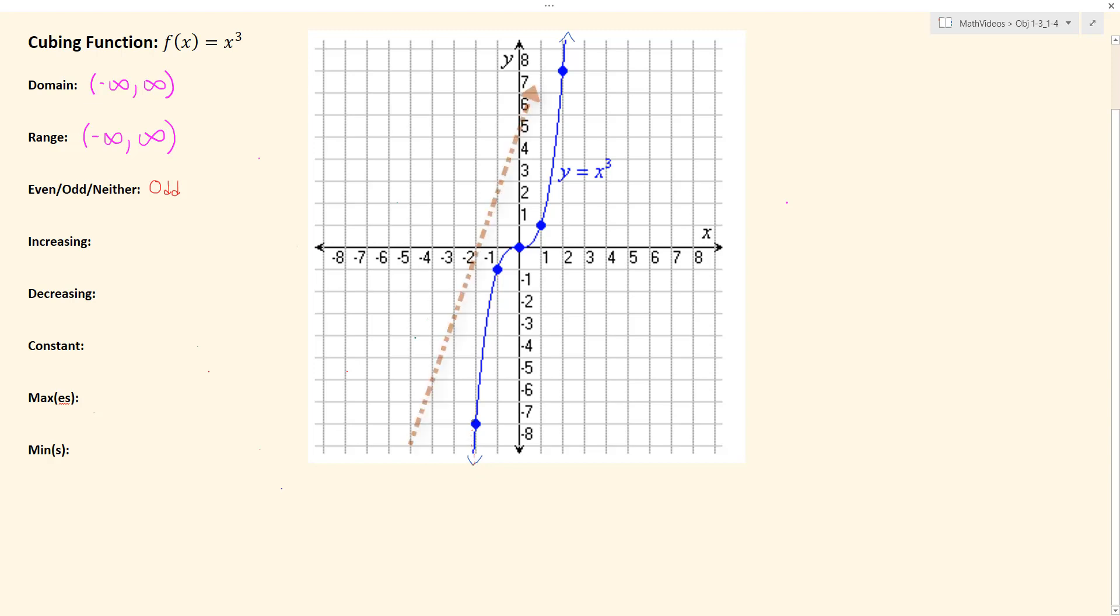If we follow our function, we can see that we are rising as we go to the right. And even though our graph changes shape, like it has this S shape, we never stop increasing as we go rightward.